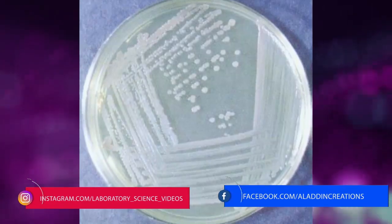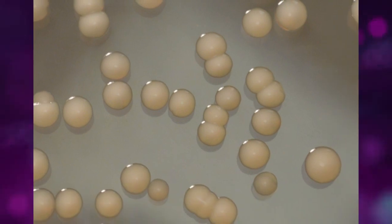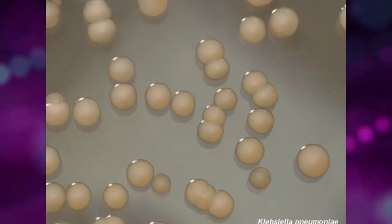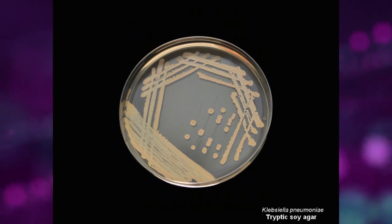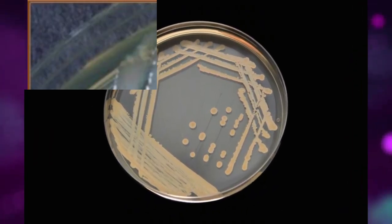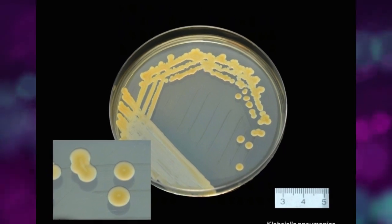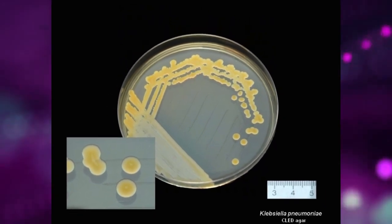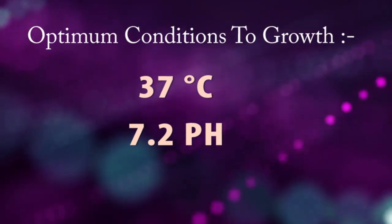Klebsiella grows well on ordinary nutrient media, and on glucose ammonium salts agar unsupplemented with growth factors. The temperature range for growth is 12 to 43 degrees Celsius, with an optimum of 37 degrees Celsius and pH 7.2.